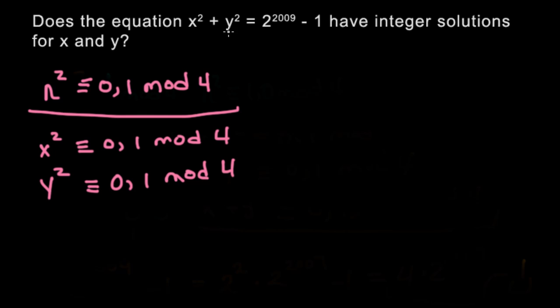Then, since the left side is x² + y², let's add those two and see what we get. When we add them, x² + y² will be congruent to, if you consider all the different pairs of 0 and 1, you have 0 mod 4, you can get 1 mod 4, or you can get 2 mod 4. So this is the left side.